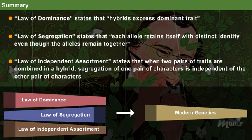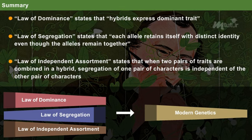Law of independent assortment states that when two pairs of traits are combined in a hybrid, segregation of one pair of characters is independent of the other pair of characters.